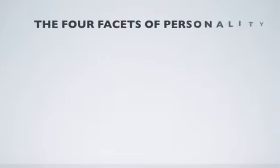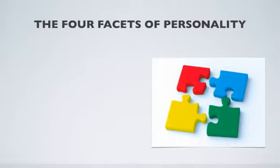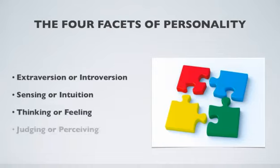Myers-Briggs type is based on four facets of personality. For each facet you must decide which style you prefer out of two options. Are you extroverted or introverted? Sensing or intuitive? Thinking or feeling? Judging or perceiving? We'll talk about each facet in depth so that you can better understand where your preferences lie.